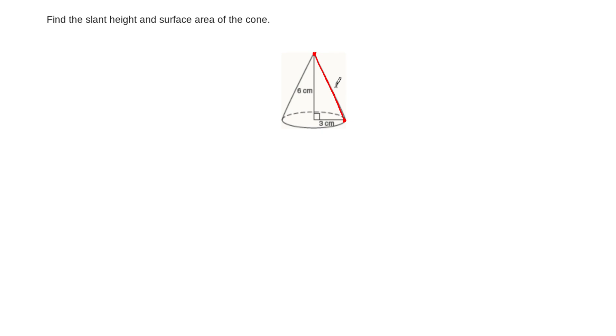That's called L. And just by looking at this, we can see that there's a right triangle. This 6 centimeters is the height of the cone, 3 centimeters is the radius of the base circle. And so just by using the Pythagorean theorem, we can compute this slant height.